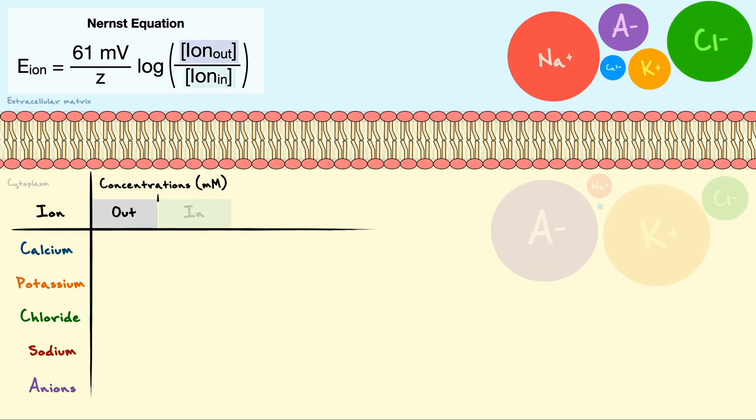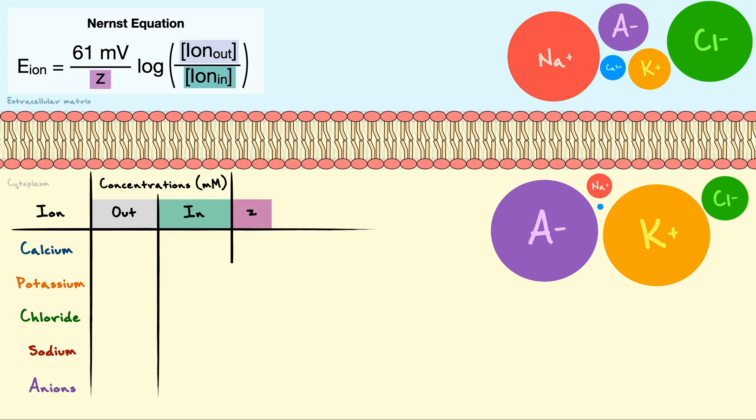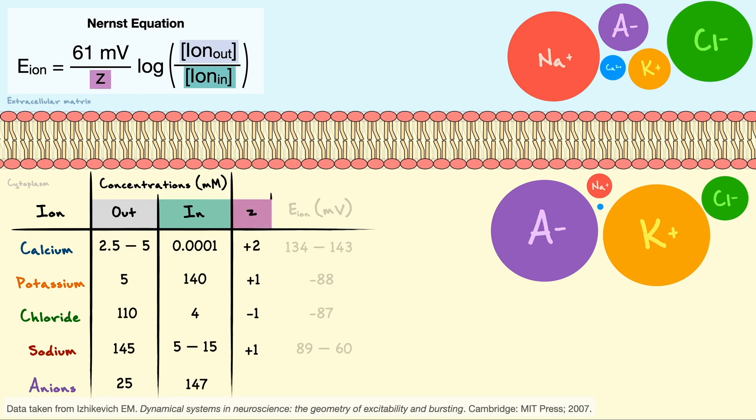To do so, we need the concentrations in and out of the cell for each ion and their valence. With data taken from this textbook, we can compute the equilibrium potential for each ion. You will notice that, let's say for sodium, the concentration inside varies from 5 to 15. Hence, the equilibrium potential also varies.